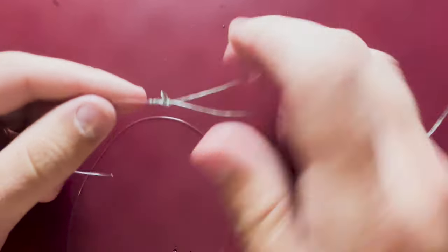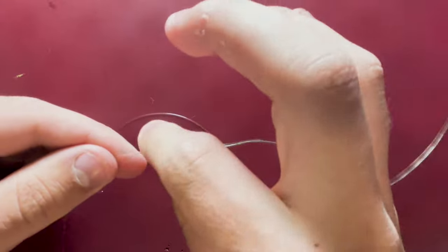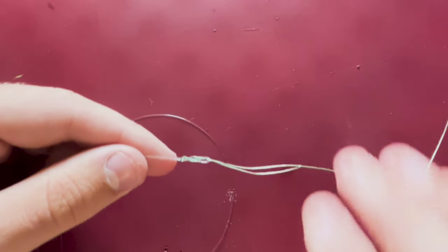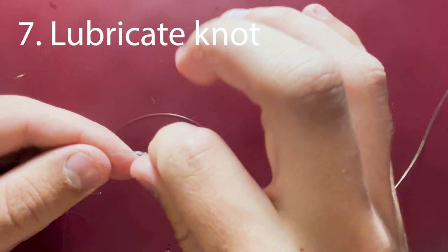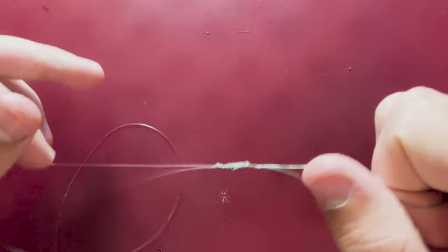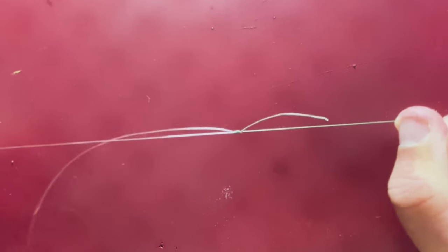You're going to lick your fingers, rub it on the line so it lubricates the knot a little bit, and then you pull that tight.